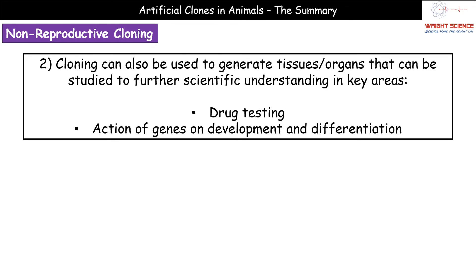A second application is creating tissues or organs for further scientific studies, including drug development. When testing drugs before they go to market, this provides a supply of cells and tissues to test for dangerous side effects. We can also look at how genes are involved in different development and differentiation functions, and even investigate chemicals used in gene switching techniques — potentially developing treatments that switch off particular genes, opening up potential treatments for genetic conditions in the future.